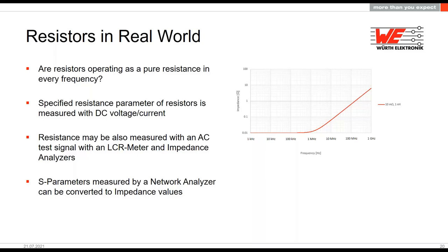Very often we get asked how our resistors behave at higher frequencies. Of course, the resistance value as stated in the datasheet is measured with DC voltage and DC current. This is enough for most resistor applications, and from most manufacturers you don't get much information about impedance. When we understand impedance as the resistance to AC voltage — same as with inductors and capacitors — because resistors are not ideal components, we have parasitic effects that change the impedance across the frequency spectrum.